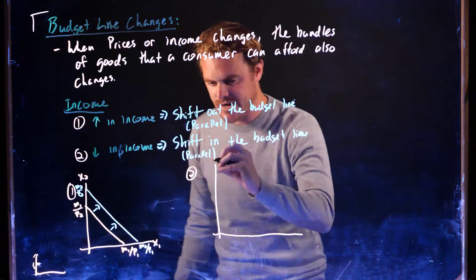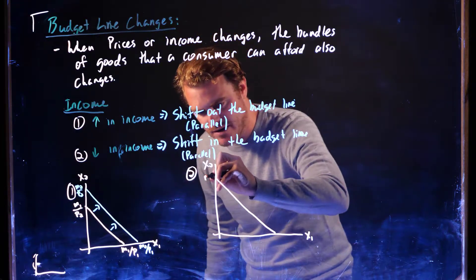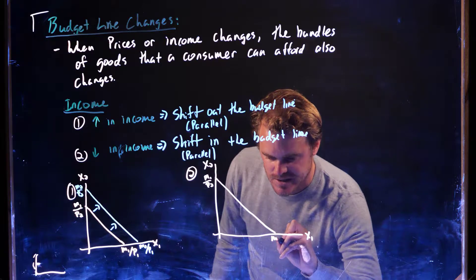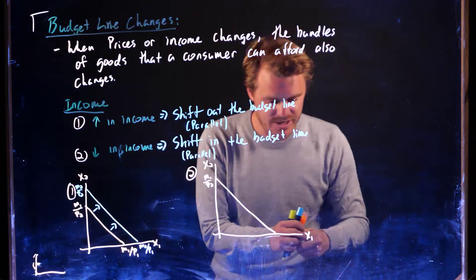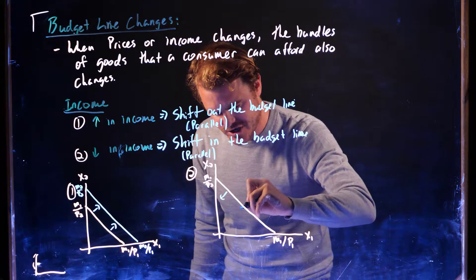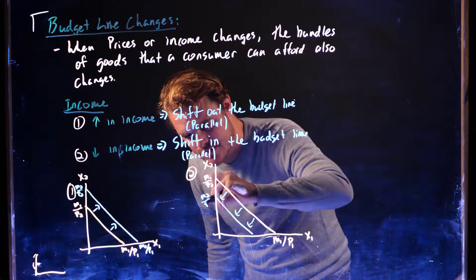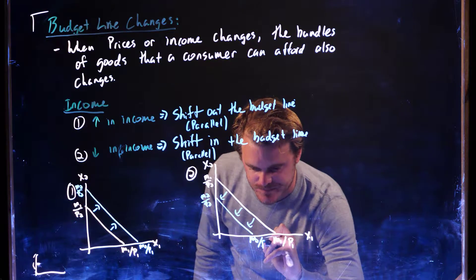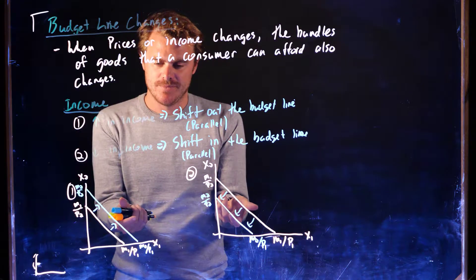For case two — a decrease in income — again we have X2 and X1. Originally we have income M1, which gives us how much of good 2 we could afford if we spent all our budget on good 2, and how much of good 1 we could afford. Then M is going down, causing a parallel shift in of the budget line because now M2 is smaller than M1. M2 divided by P2 is a smaller number, and the same on the other intercept. This is what changes in disposable income do to our budget lines.